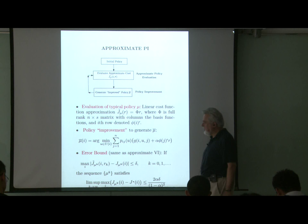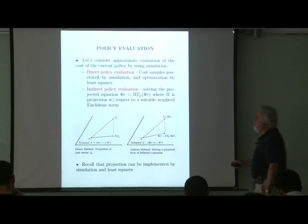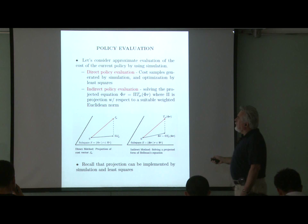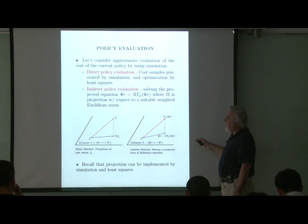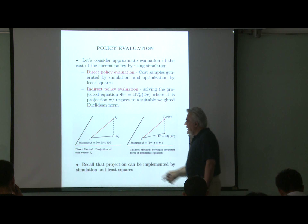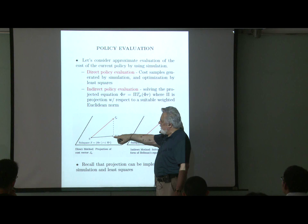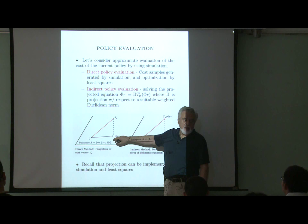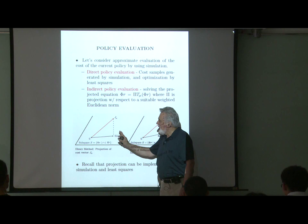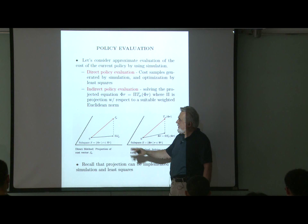That is the overall framework, and now we want to focus on approximate policy evaluation. There are two approaches: the direct method and the indirect method. In the direct method, we have this j_mu that we want to approximate, and we project it down within the approximation subspace. We could use simulation to do that. This approach is legitimate but not very popular, and there are quite a few reasons for that.